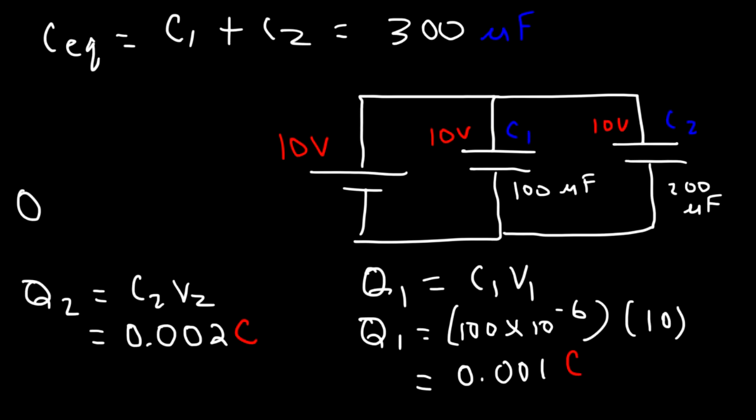The total charge stored in this network is basically Q1 plus Q2. So it's 0.001 plus 0.002, which is 0.003 coulombs.